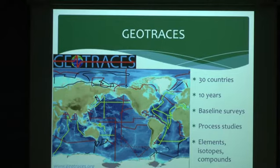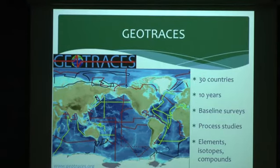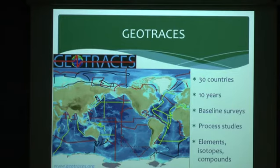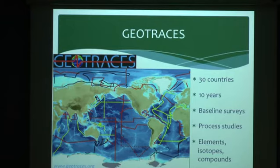There are 30 countries involved in GEOTRACES. The program is planned for 10 years, starting in 2010. The map shows different baseline surveys planned — black and yellow legs are already completed cruises, red are planned ones, with the exception of the leg off South America which just finished a few weeks ago. The program does baseline surveys within one degree of resolution for latitude and longitude across basins, and in the US program we're doing 37 depth profiles down to within 10 meters of the bottom. All transition metals and most of the rest of the periodic table, plus isotopes, are covered.